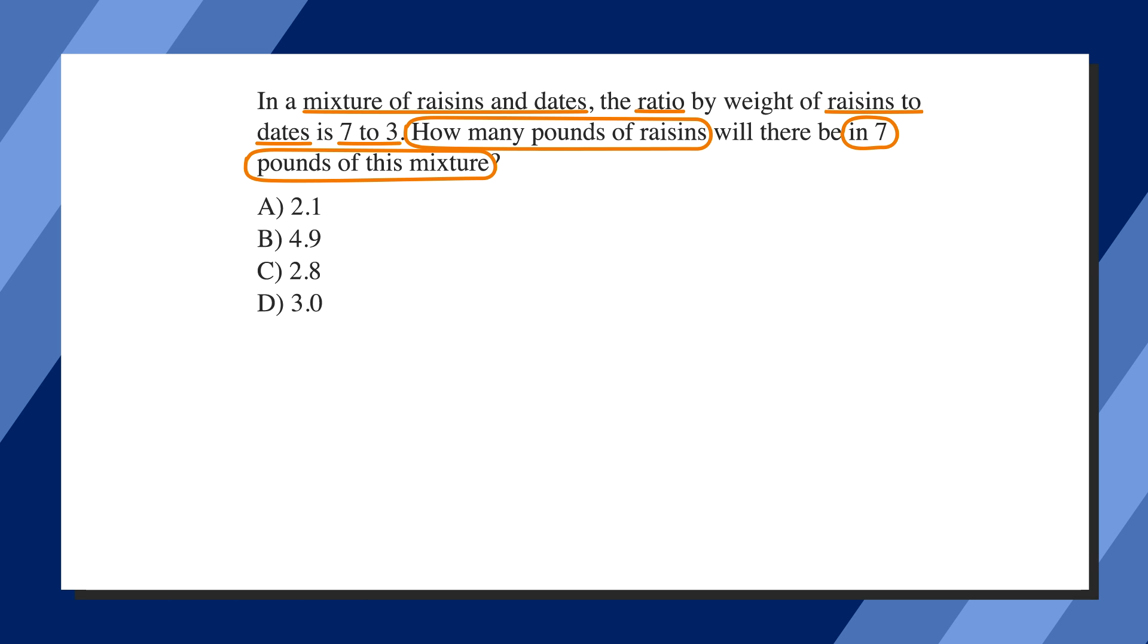We'll start by circling the keywords and underlining the facts. We'll also label the answer choices as the weight of raisins. So we know that the ratio by weight of raisins to dates is 7 to 3. Writing out 7 r's for raisins and 3 d's for dates, we see that we have 7 out of 10 pounds of raisins and 3 out of 10 pounds are dates. In other words, seven-tenths of the mix by weight is raisins.